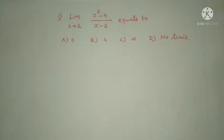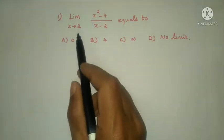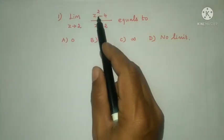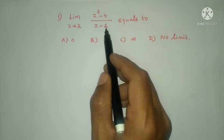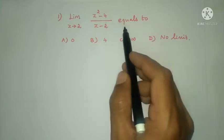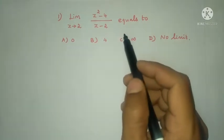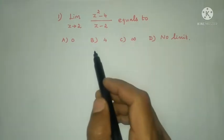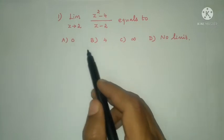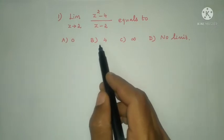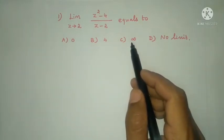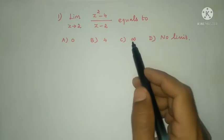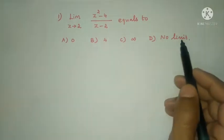First question: limit z tends to 2, z squared minus 4 divided by z minus 2, equals? Option A: 0. Option B: 4. Option C: infinity. Option D: 1, then no limit.